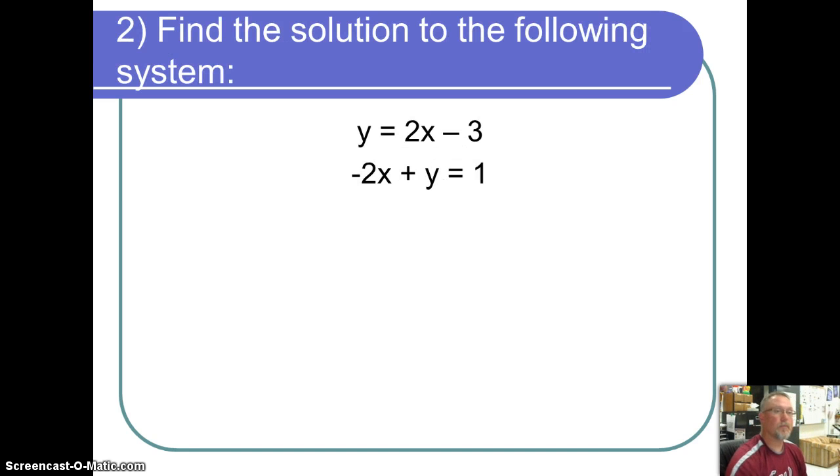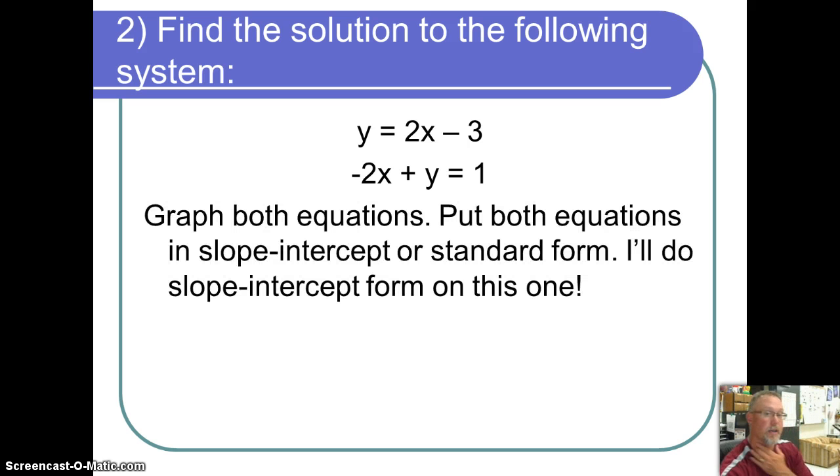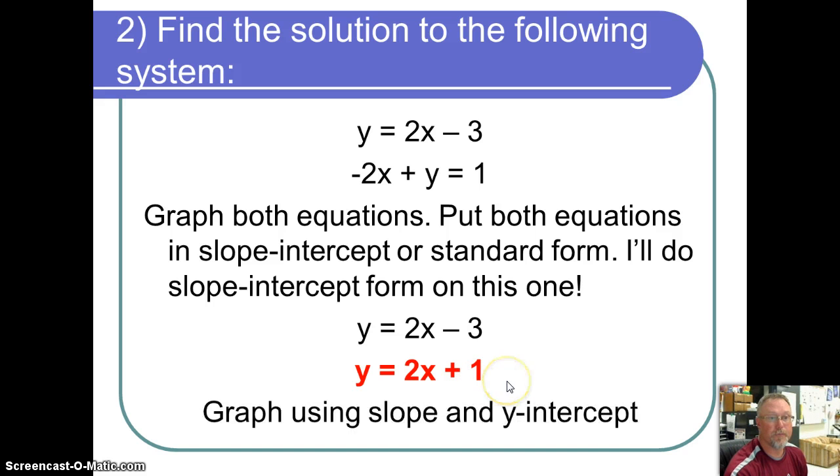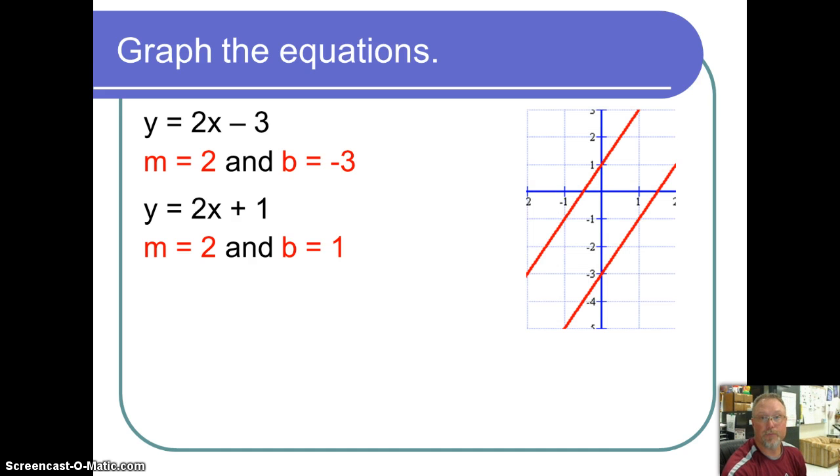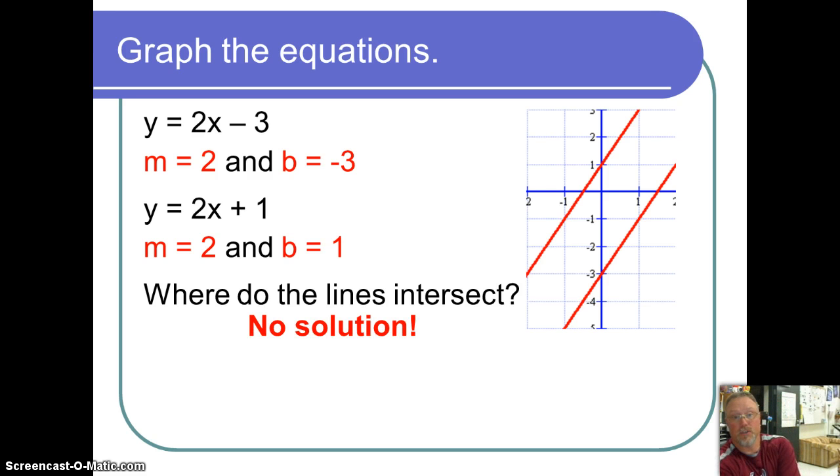Let's try a different one. To find the solution of this one, you notice that one is already in y equals mx plus b form. The other one is in standard form. We move it over, rearrange negative 2x plus y equals 1, so we made it y equals 2x plus 1. We're going to graph using the slope-intercept form. Here's our slope and y-intercept for each of them. Now, one thing you should have probably noticed is that they don't intersect. So there is no solution for this one.